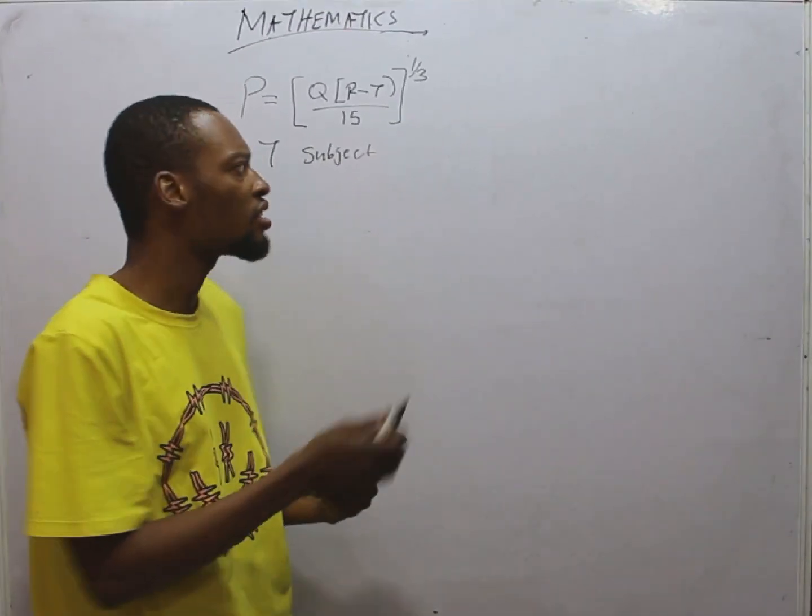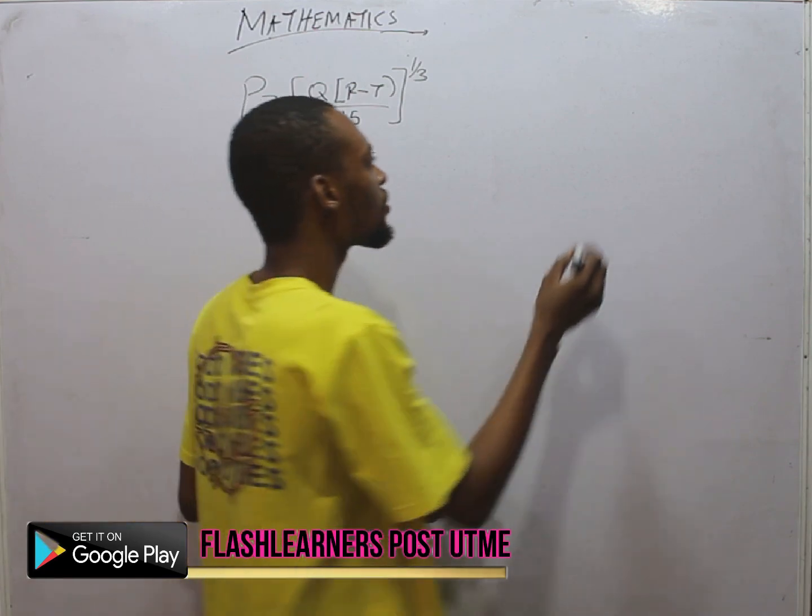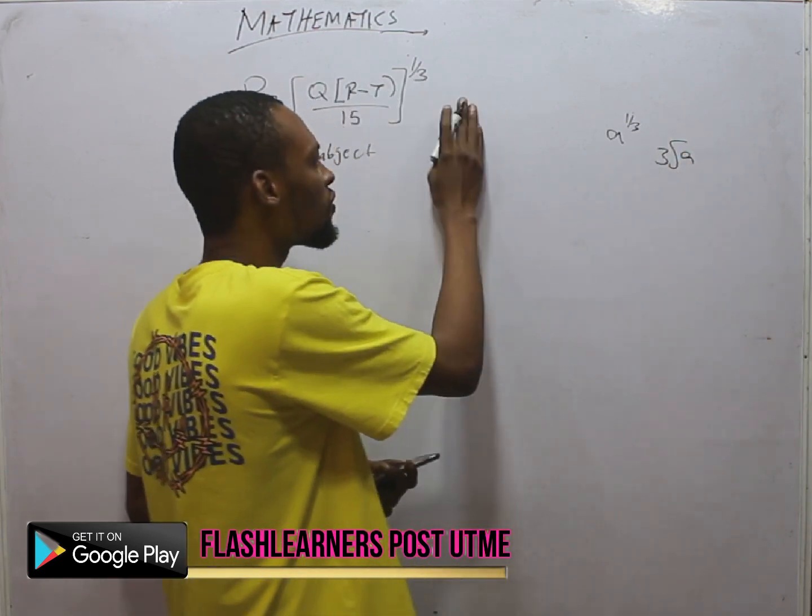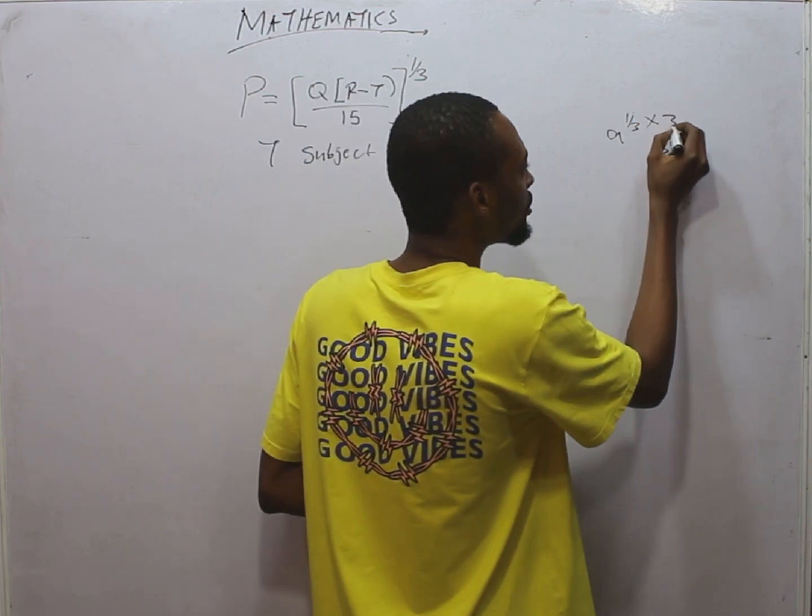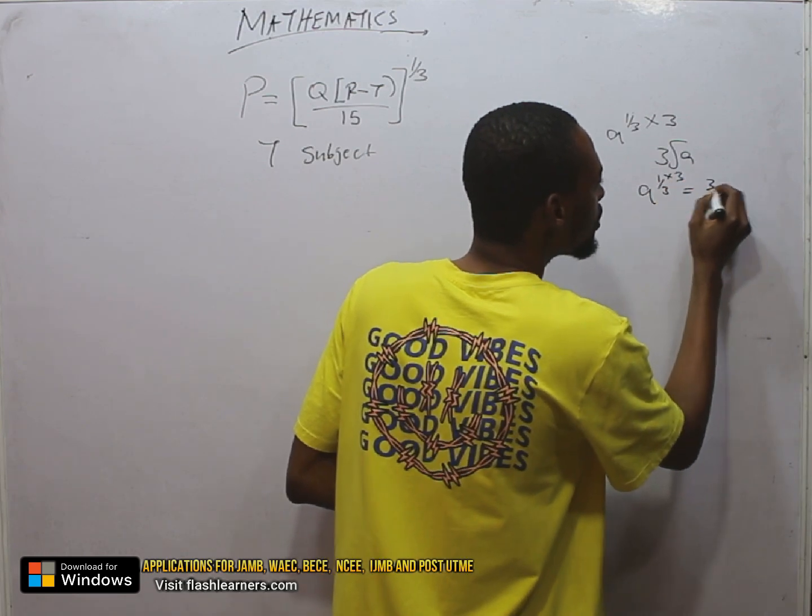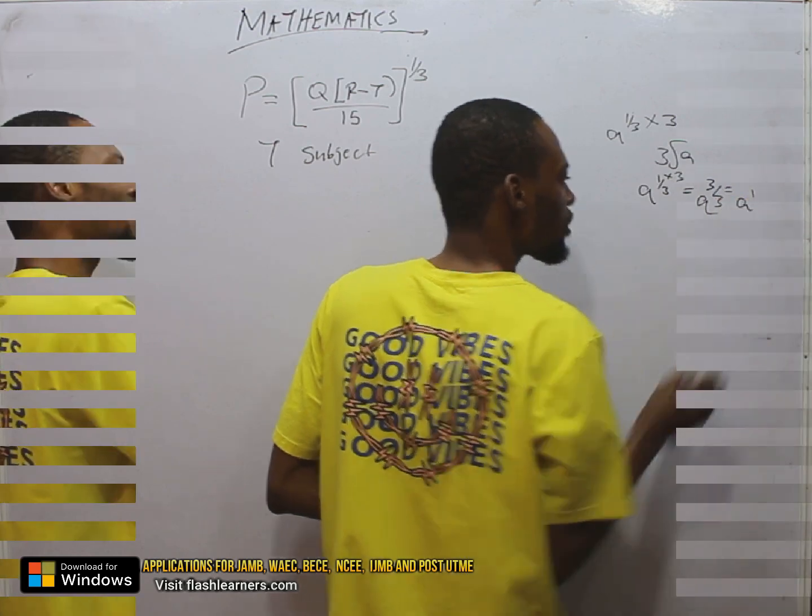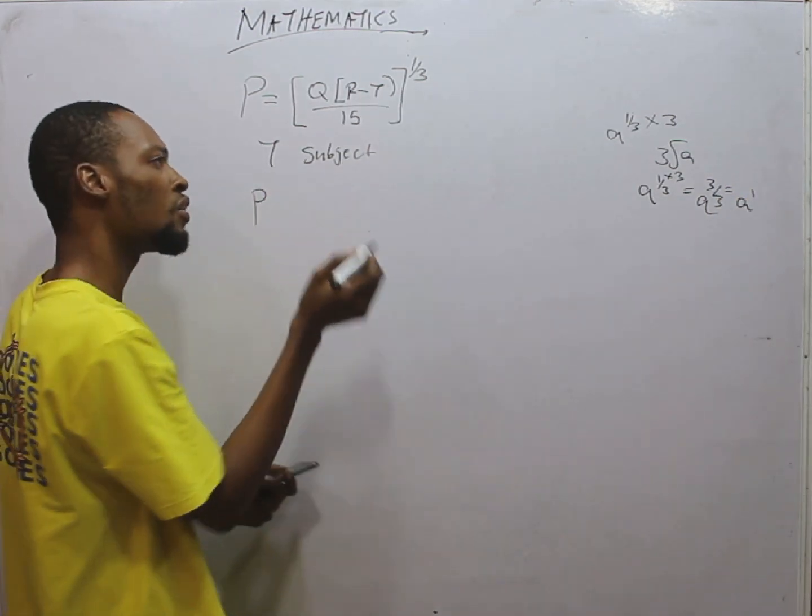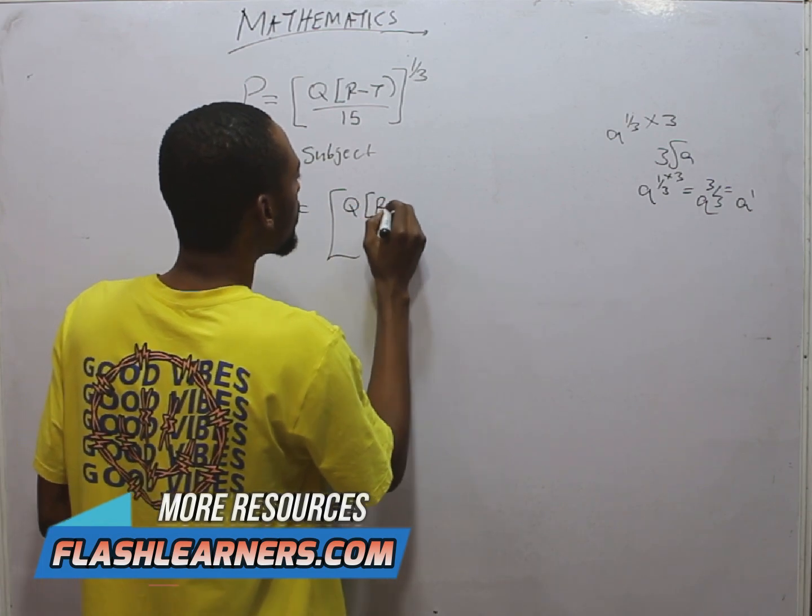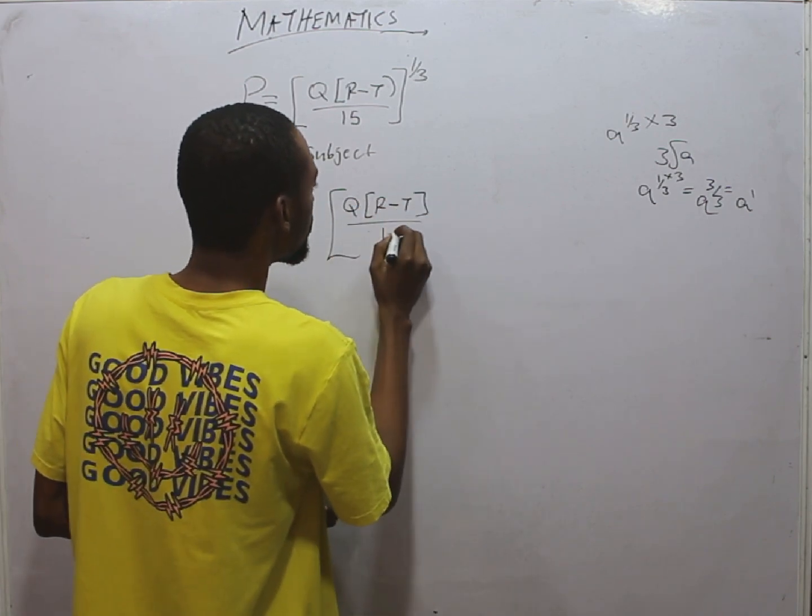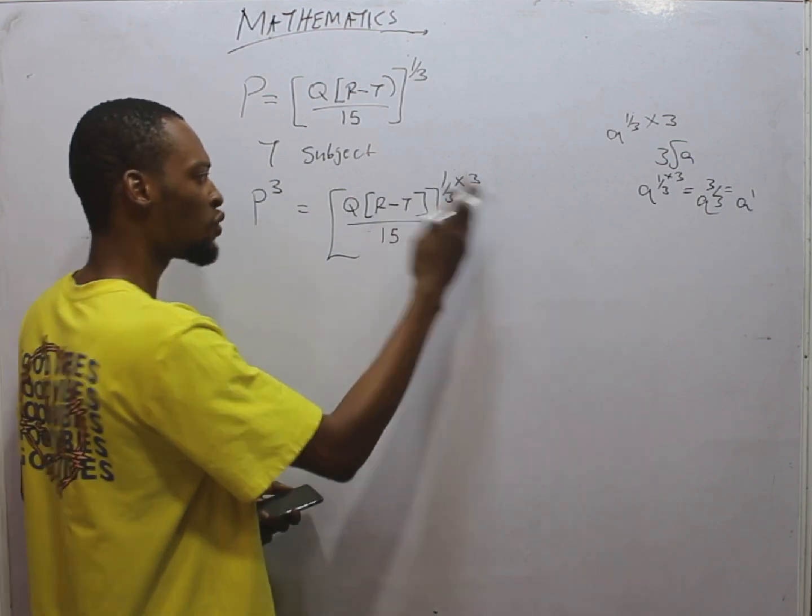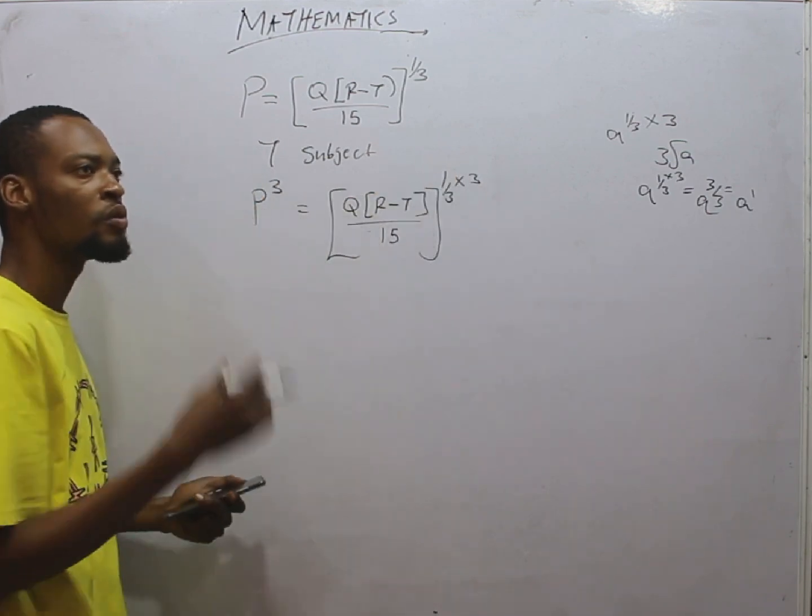The first distraction we shall be removing is raised to the power of 1 over 3. If I say A raised to the power of 1 over 3, this is the same thing as the cube root of A. How do we remove 1 over 3? What if we multiply here by 3? We simply get A raised to the power of 1 over 3 times 3, which is 3 over 3, A raised to the power of 1. Let's multiply both sides by raised to the power of 3.